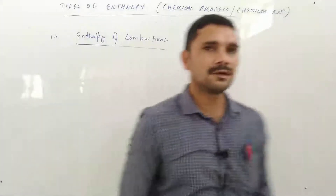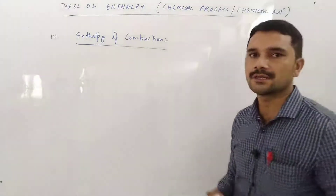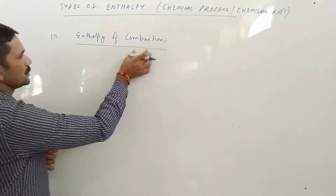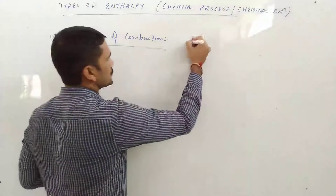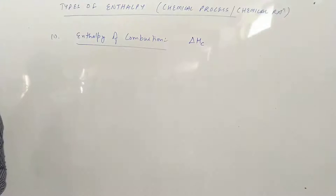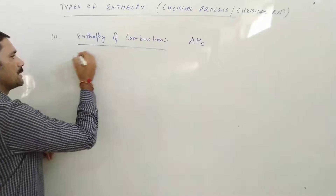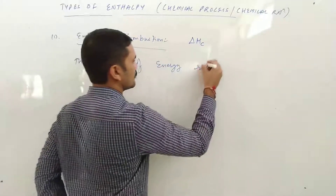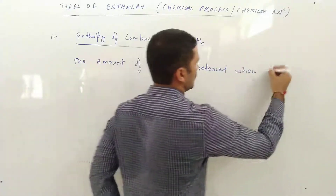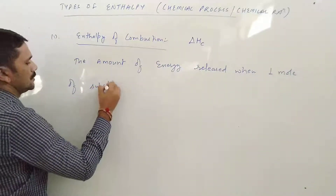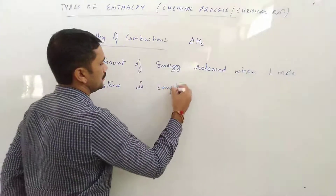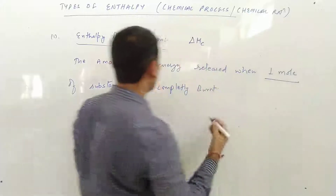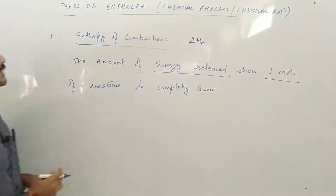To bacchon, humne chemical reactions padhi hain. In chemical reactions ki baat karte hain jiske andar hum kisi cheez ko jala rahe hote hain in the presence of oxygen. To aisi reaction ko hum kya keh sakte hain? That is called oxidation reaction ya phir combustion reaction. To on the basis of combustion reaction, is enthalpy ko kya naam diya? Enthalpy of combustion, aur isko represent kiya jaata hai delta H_C se — C ka matlab hai combustion. Definition: the amount of energy released when one mole of substance is completely burnt.